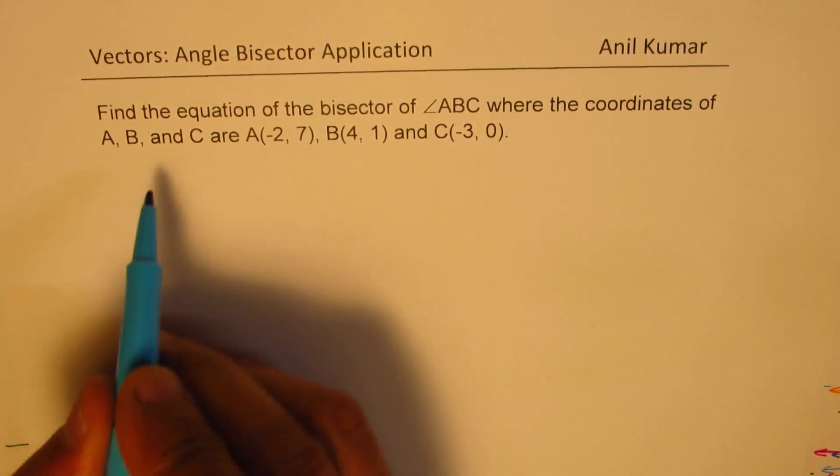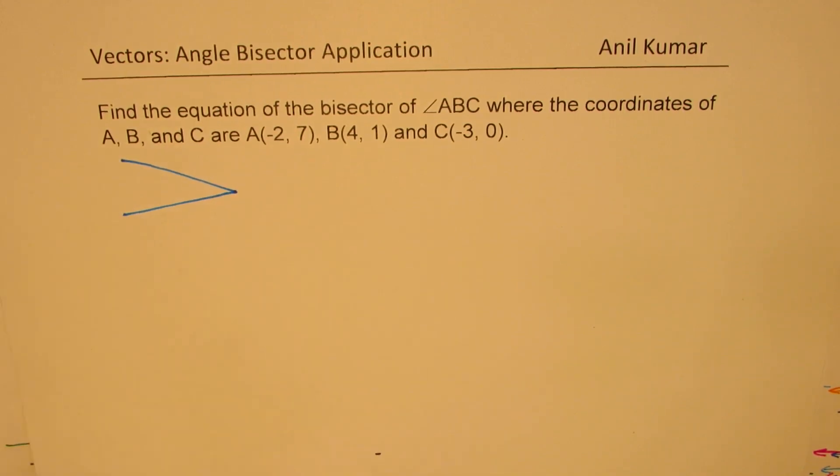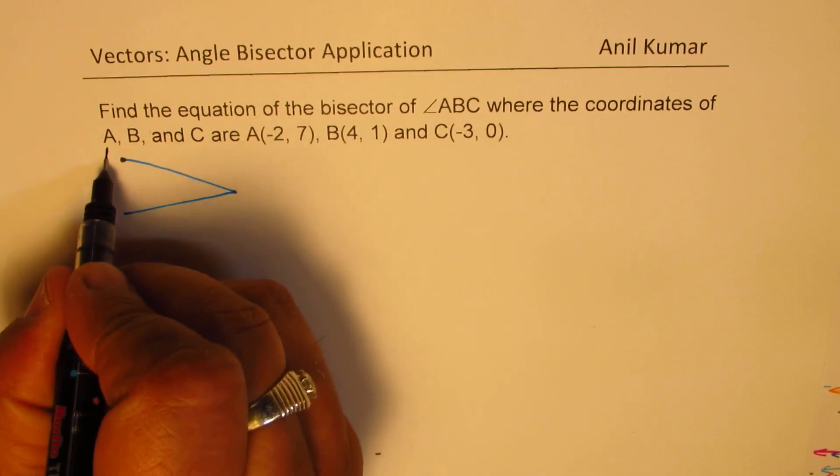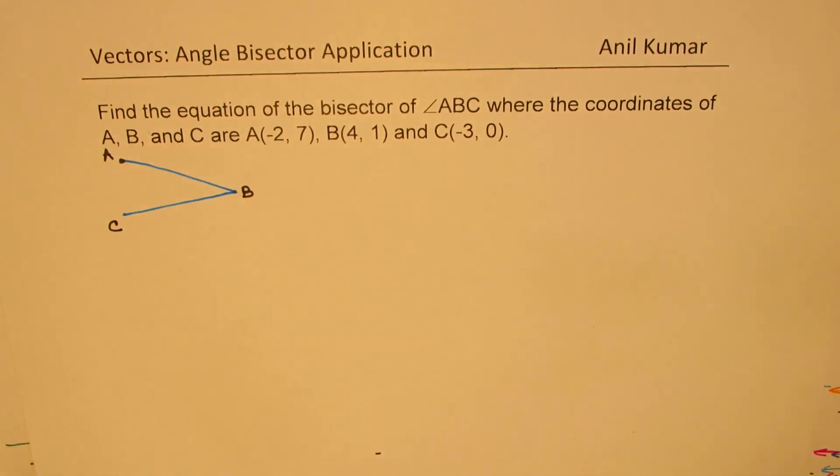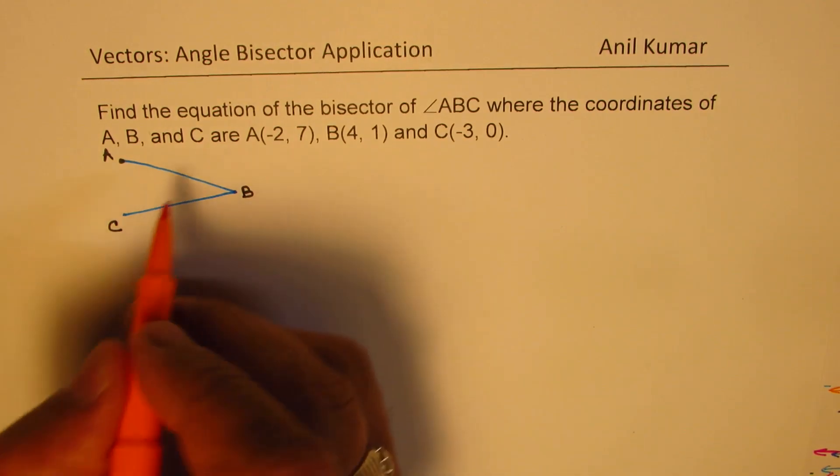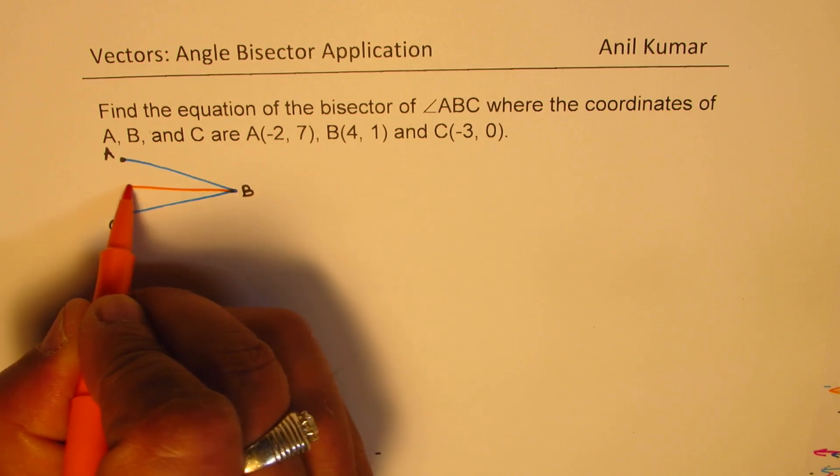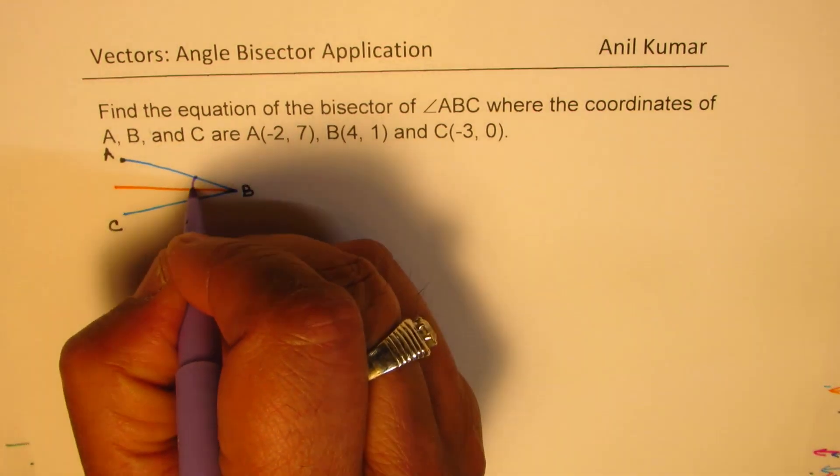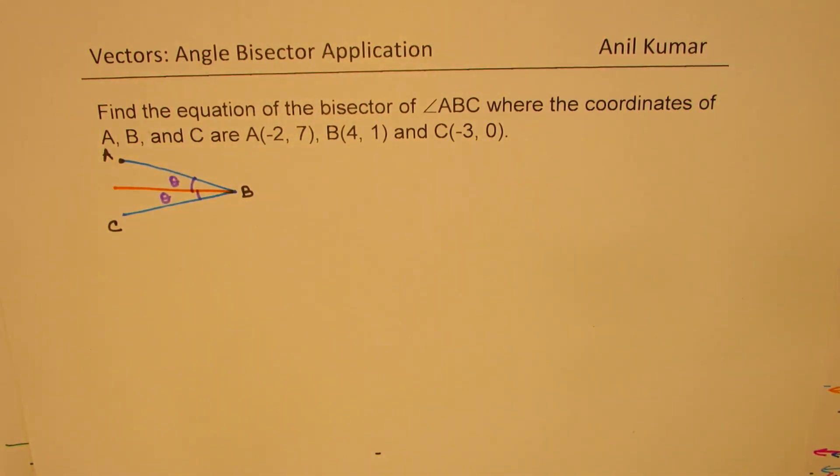Now, that basically means that we are given something like this, one particular angle, where the point A is given to us, B and C, and we need to find the equation of the line which bisects this particular angle. Bisects, as you know, means both the angles should be same, that is theta. That is the situation.